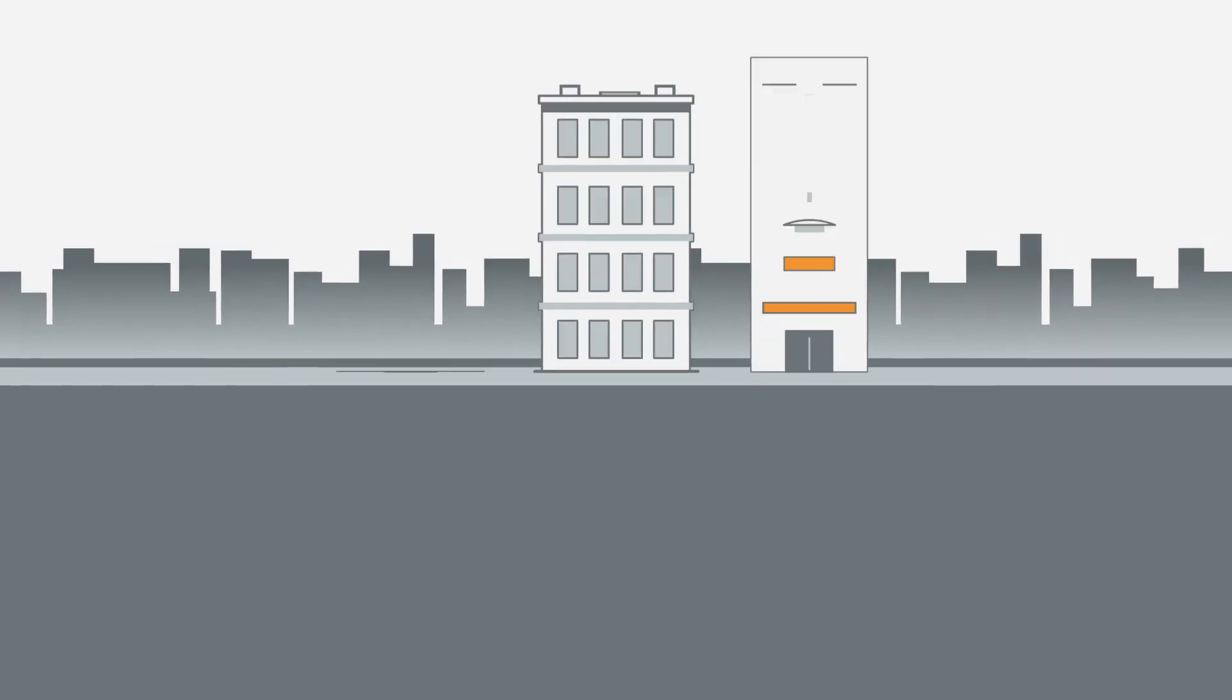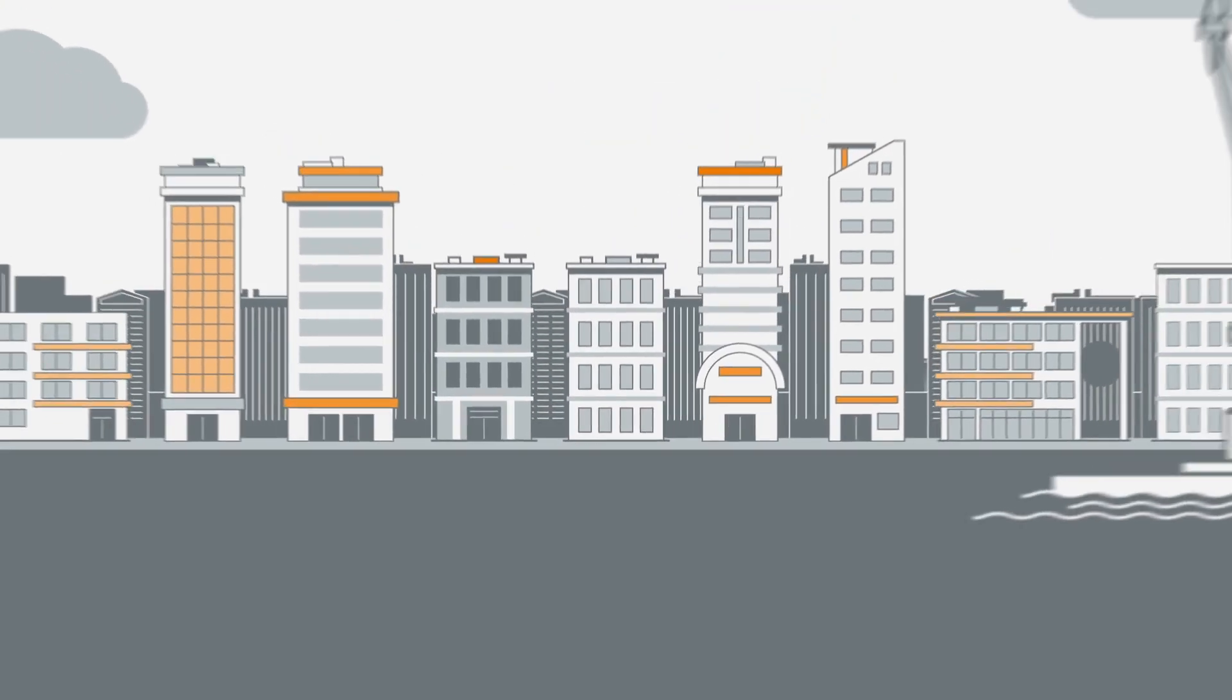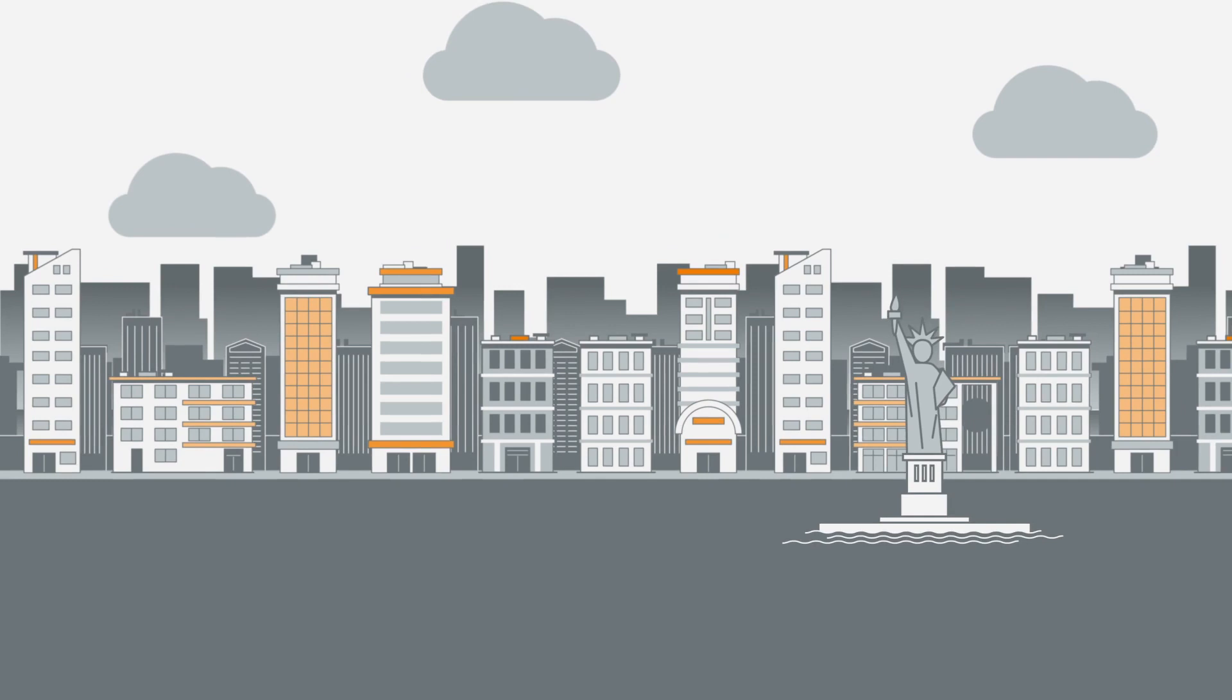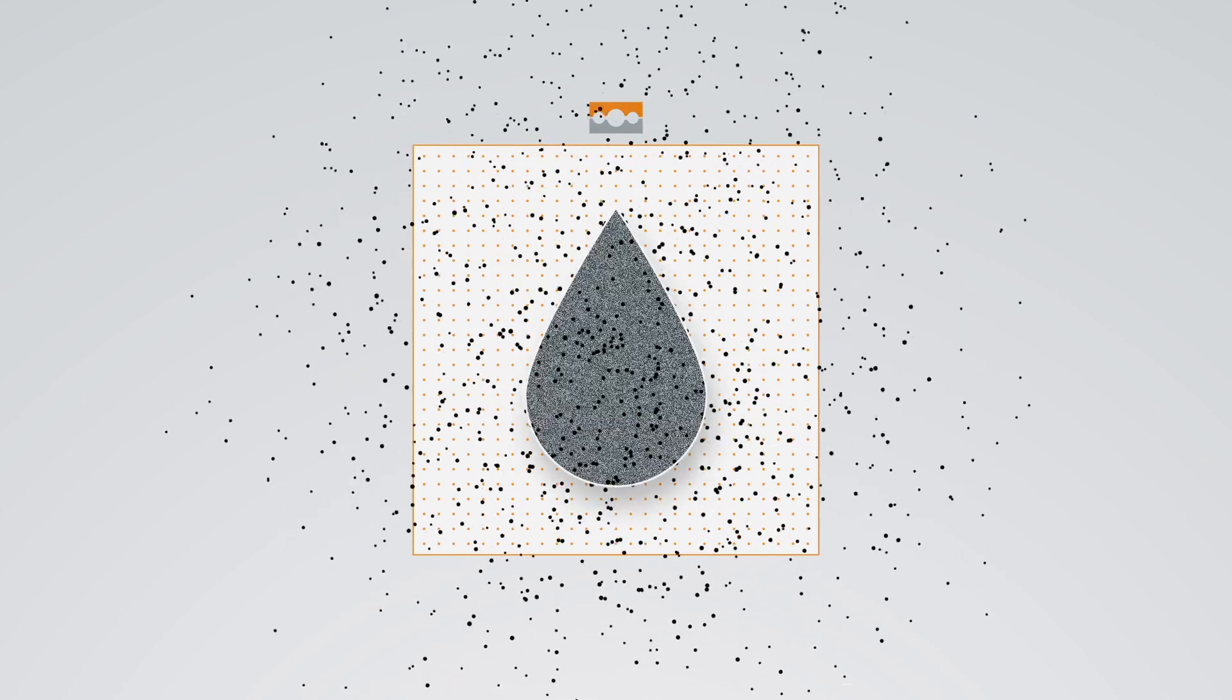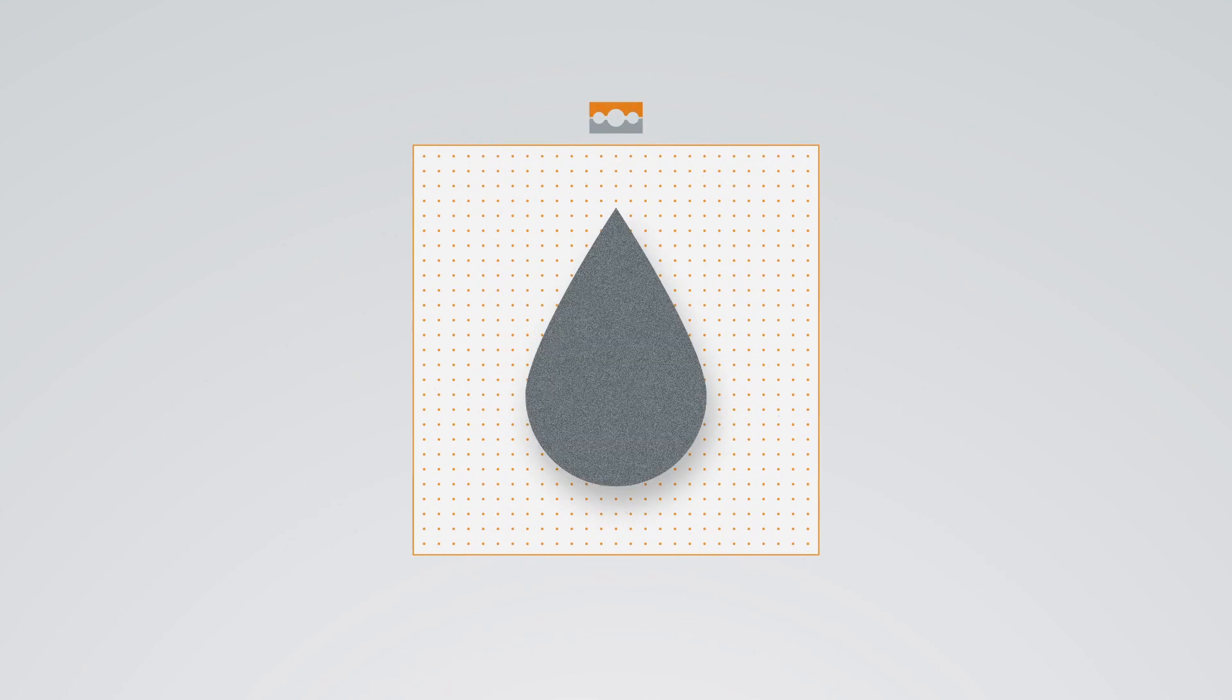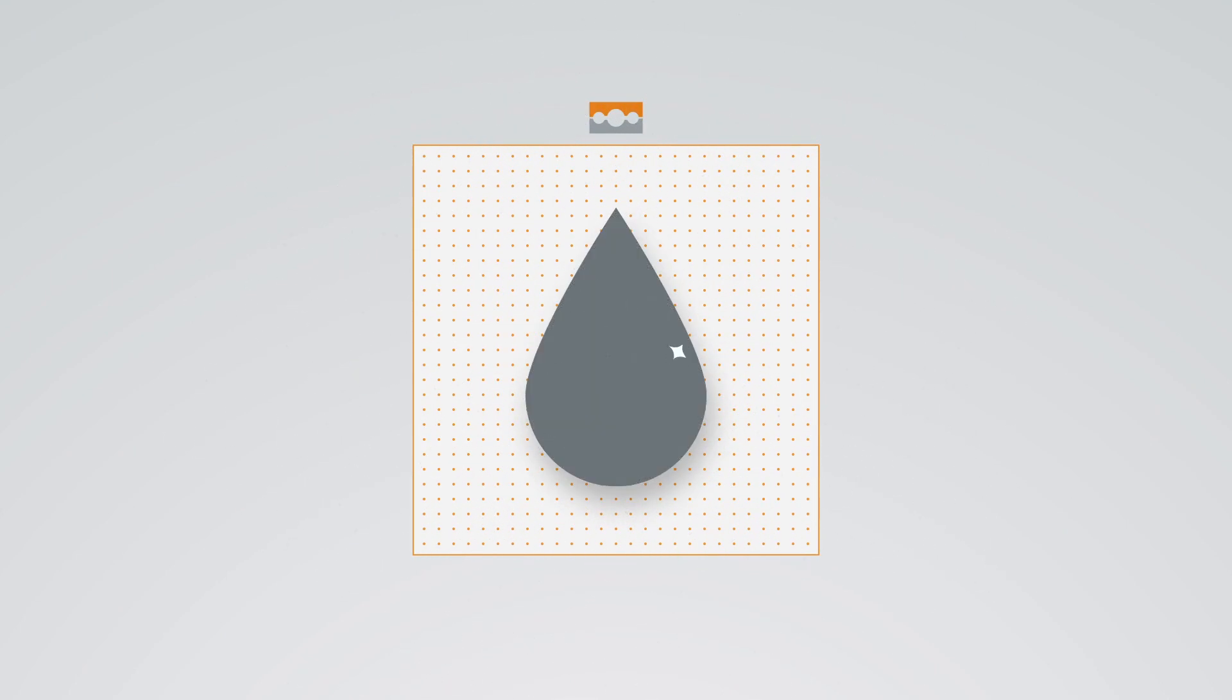The world's building stock is expected to double by 2060, like building another New York City every month. This is going to require a lot of concrete and every drop poured can be used to store carbon dioxide, helping the world meet its climate goals.